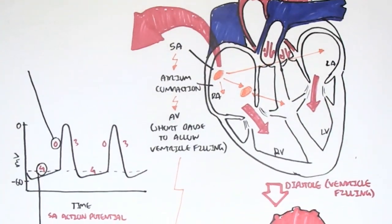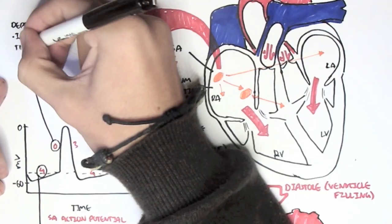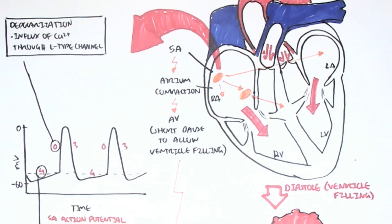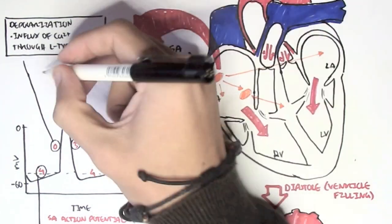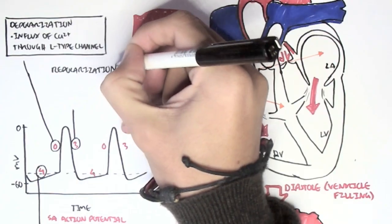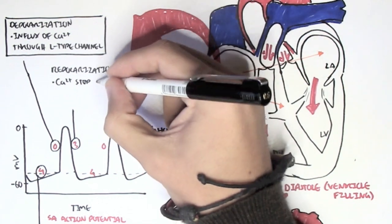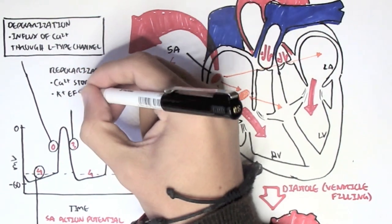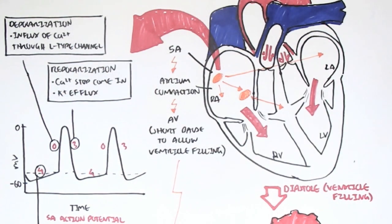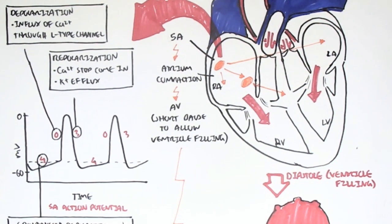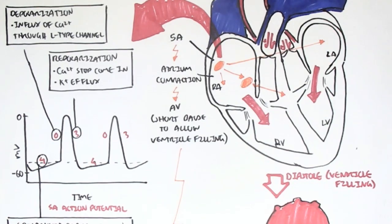Phase 0 is depolarization, when we have rapid influx of calcium ions through L-type calcium channels, causing the membrane potential to become more positive to about 0 millivolts. This is the action potential — when the sinoatrial node sends out the impulse, causing the atrial myocytes to depolarize. Then we have phase 3, repolarization, when calcium ions stop moving inside and we have efflux of potassium ions. The potassium ions leaving the cell cause it to become more negative, repolarizing to about negative 60 millivolts, when the calcium channels close. Then phase 4 begins again — spontaneous depolarization.